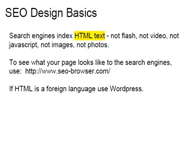You can see what your page looks like to search engines by going to SEO-browser.com. That will return a page that looks exactly like what the search engines see. If you have a lot of JavaScript, video, or images, you may be amazed at how empty the page looks. If HTML is a foreign language, WordPress is a very good choice, because with the dozens and dozens of free plugins available, producing SEO-friendly pages is a very simple task.